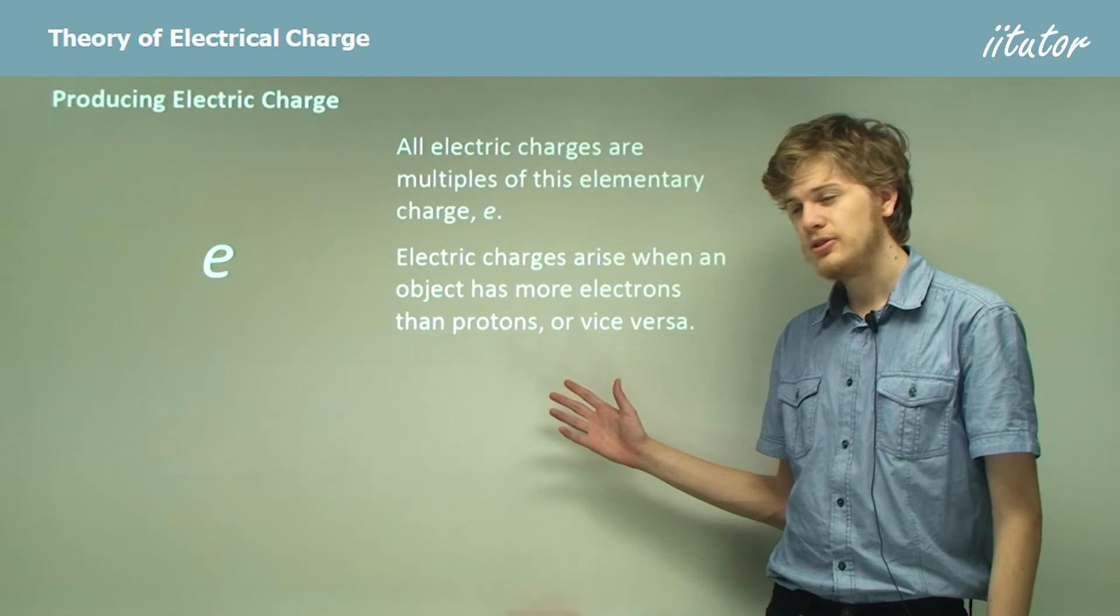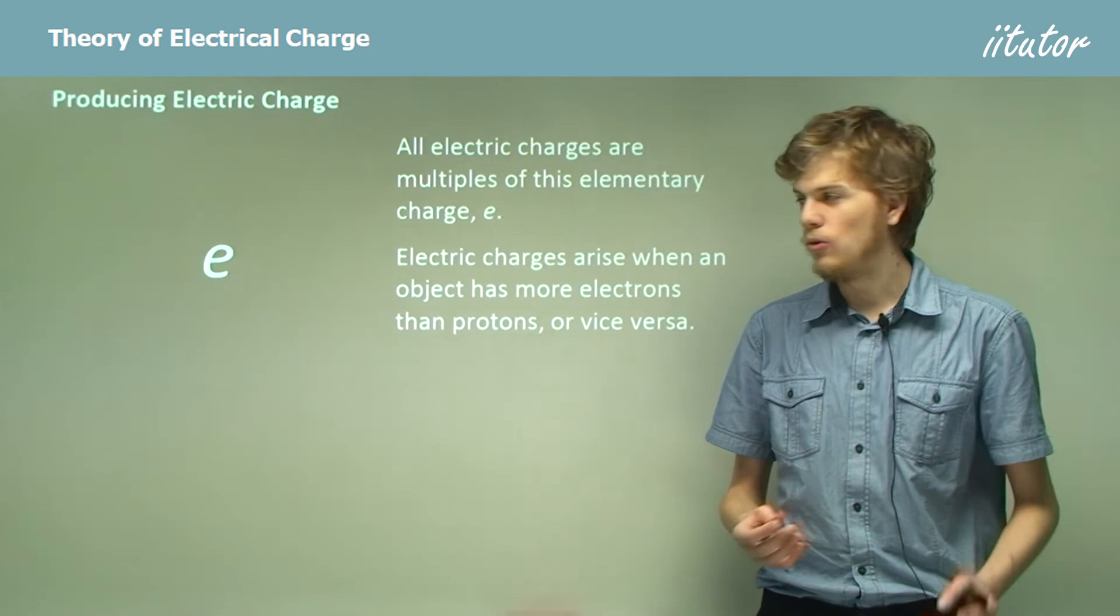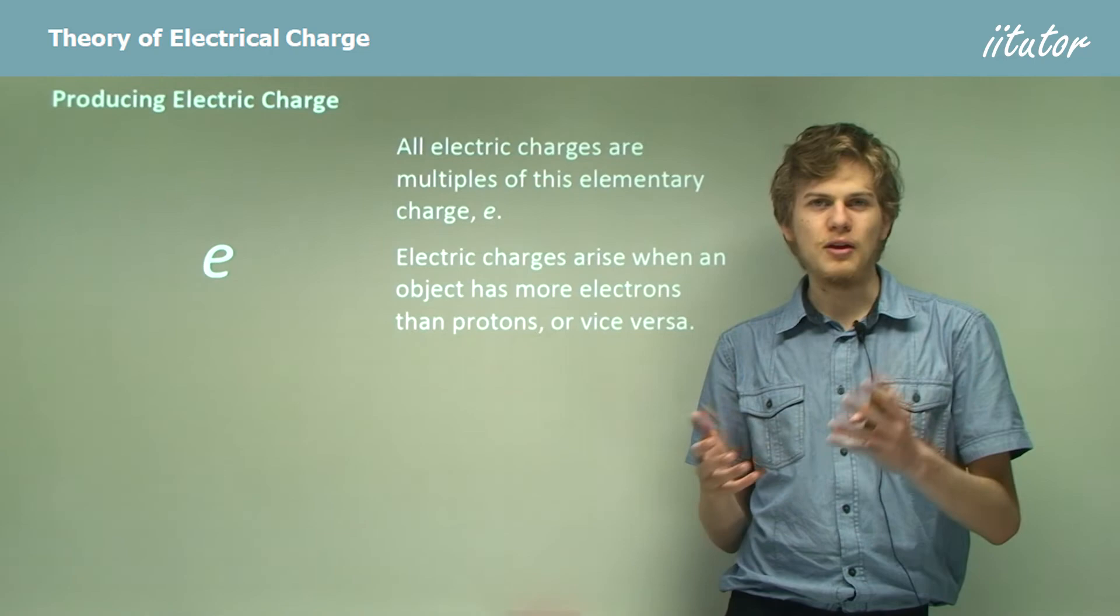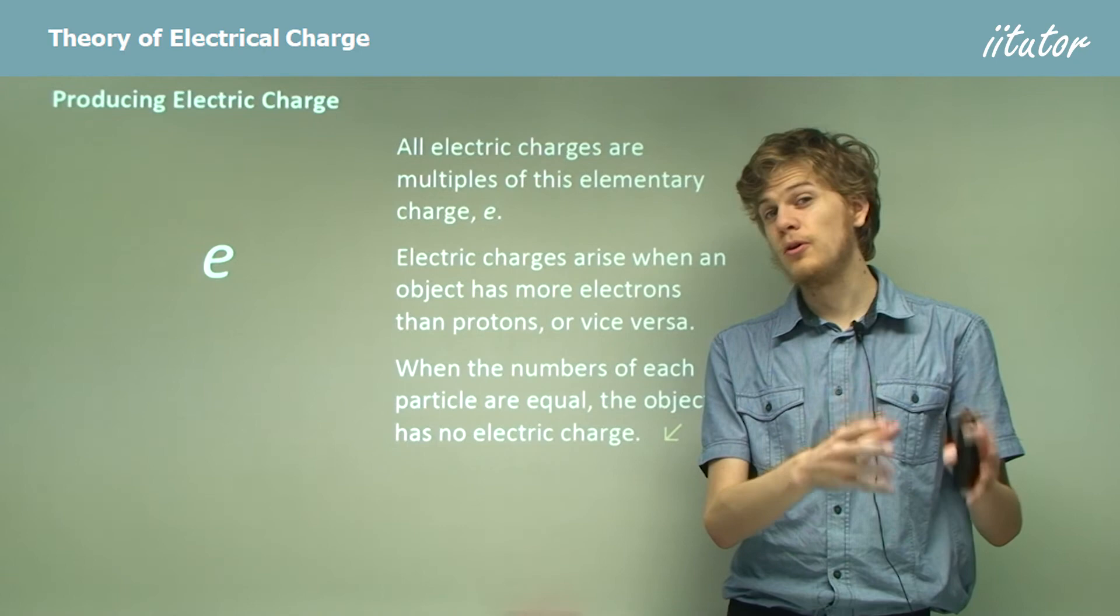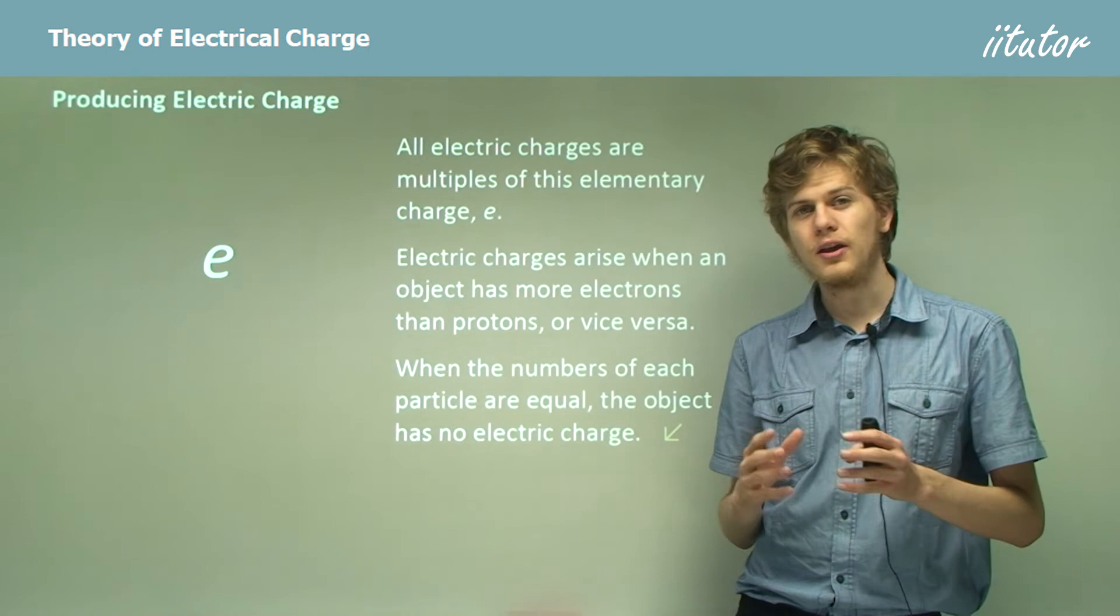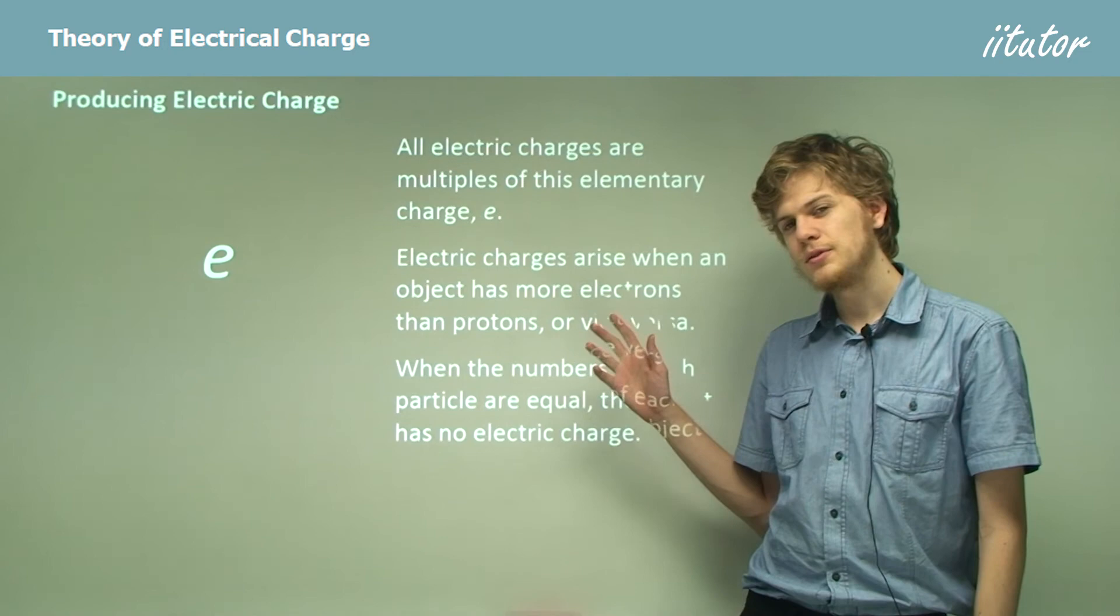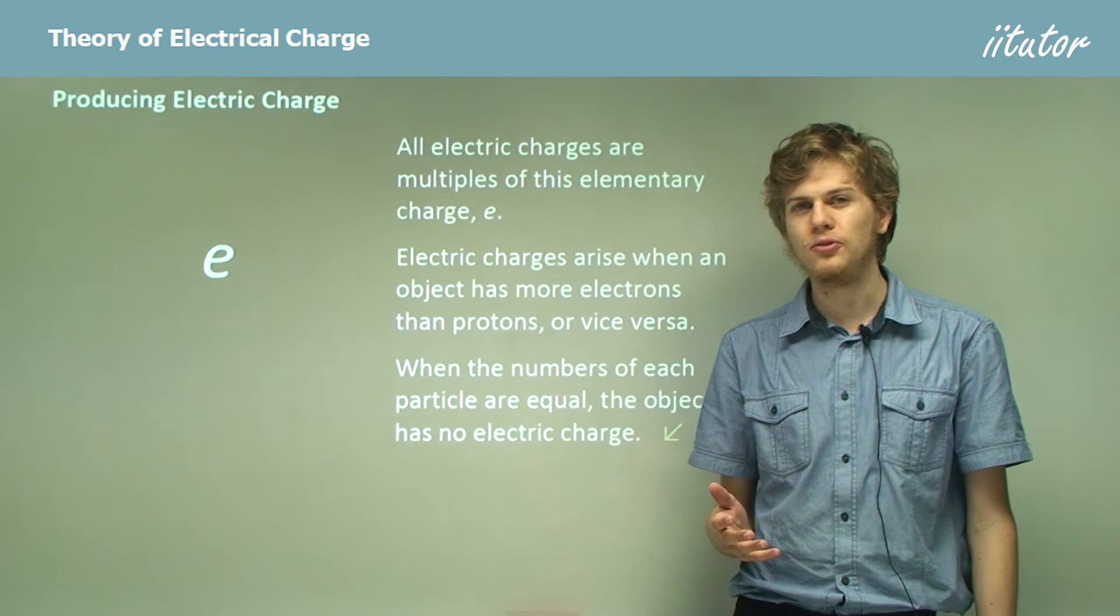Electric charges arise when an object has more electrons than protons, or vice versa. That is, more protons than electrons. If they have the same amounts, then the charge will cancel out. So when the numbers of each particle are exactly equal, the object will have no net charge, because every proton that has a charge of positive 1.6 times 10 to the minus 19 is cancelled out by an electron that has a charge of negative 1.6 times 10 to the minus 19. So all electric charges are due to an imbalance between the number of protons and the number of electrons in a material.